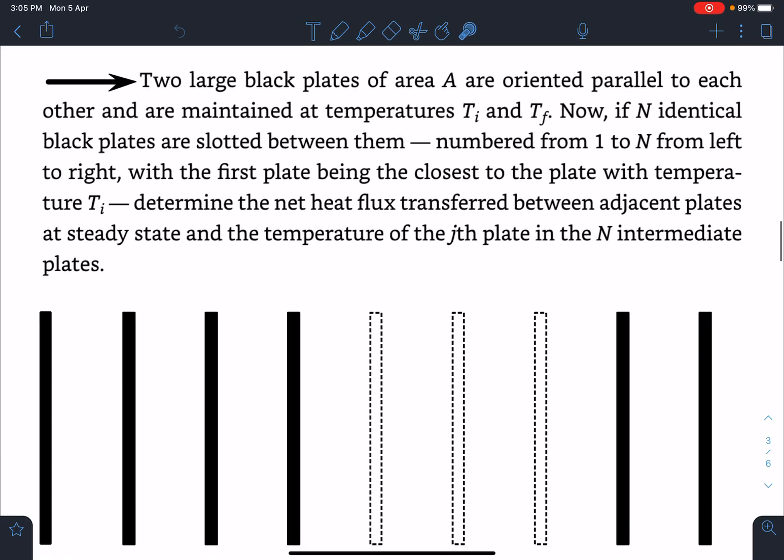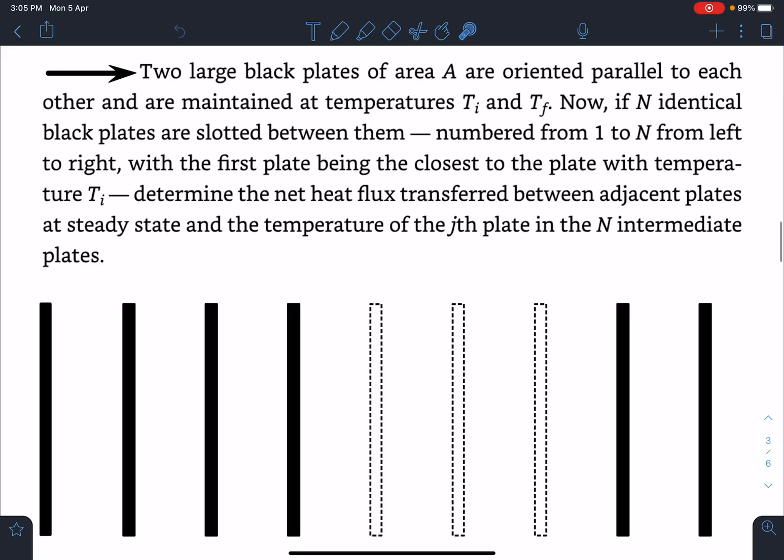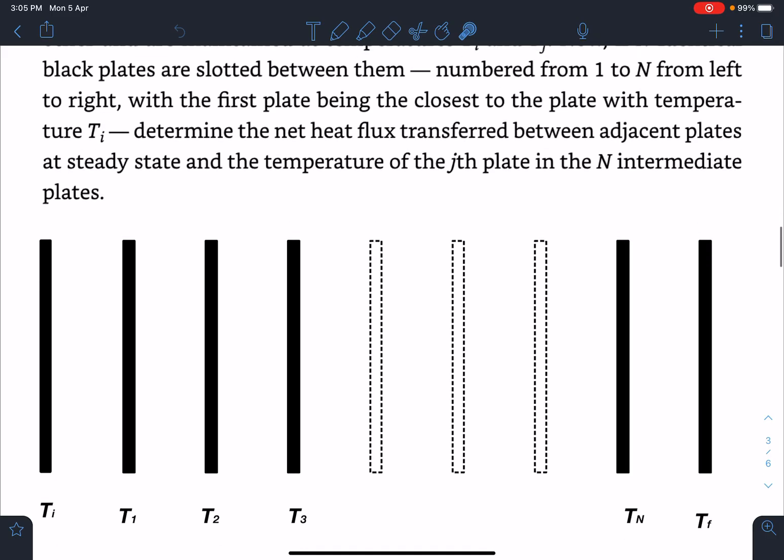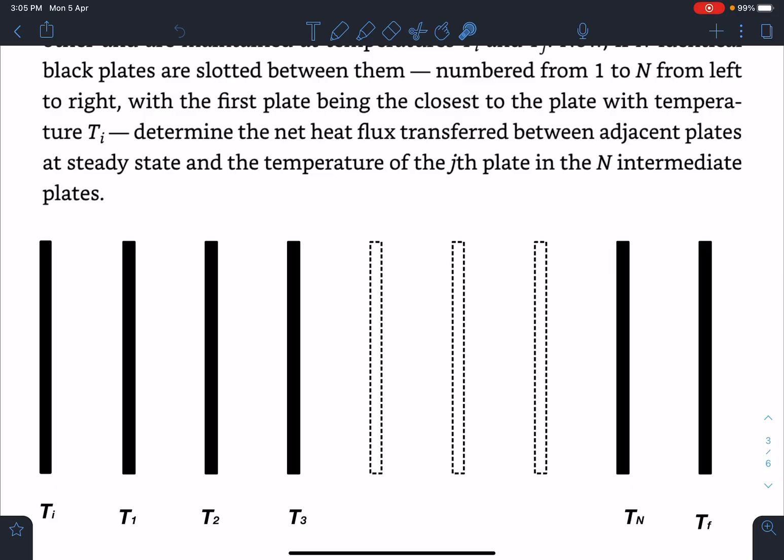Here is the statement of this problem. Two large black plates of area A are oriented parallel to each other and are maintained at temperature Ti and Tf. If N identical black plates are slotted between them, numbered from 1 to N from left to right, this is one plate here and this is another plate. Between them N plates are kept, with the first plate being closest to the plate with temperature Ti.